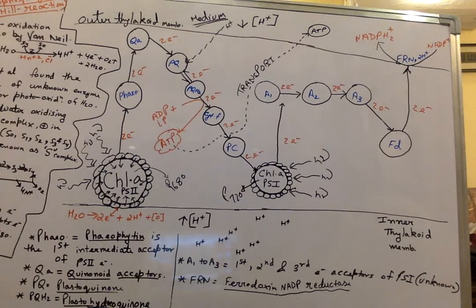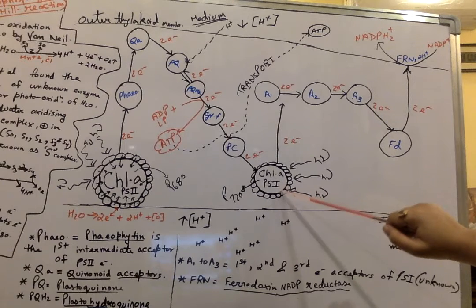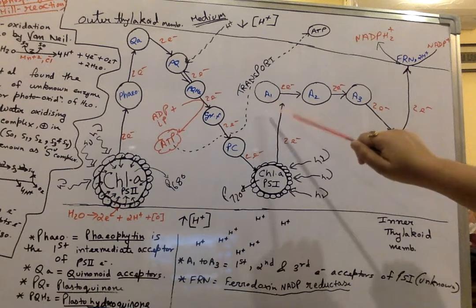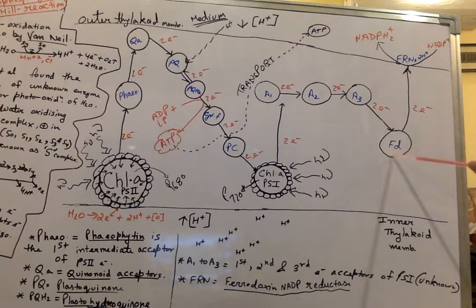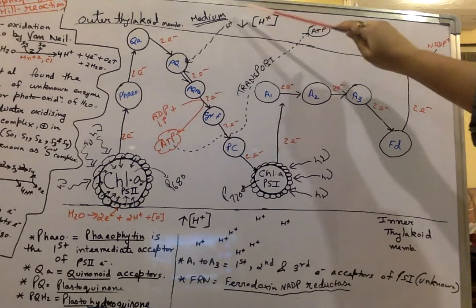A question may be asked: after which process is NADPH2+ synthesized? Electrons accepted from PC by the PS1 reaction center travel to the unknown first electron acceptors A1, A2, A3, then move into FD (ferredoxin), and ultimately to the outer thylakoid membrane where, in the presence of FNR (ferredoxin NADP reductase enzyme) along with two hydrogen ions, NADPH2+ is synthesized from NADP+.